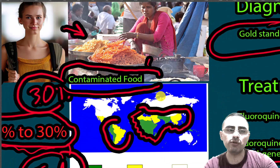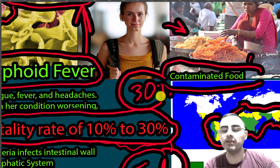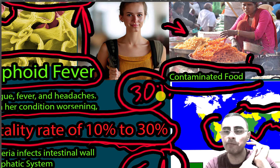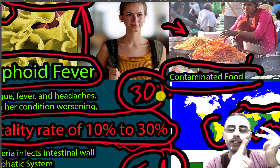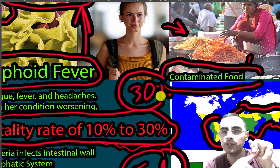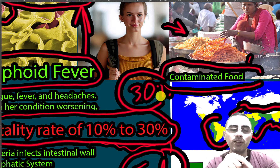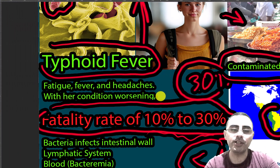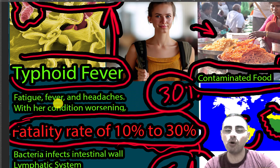In summary, the key things to remember about typhoid fever: contaminated water and food are the main transmission routes, especially in Southern Asia — including India and Pakistan — and other endemic regions. It is an emergency situation that requires early treatment.